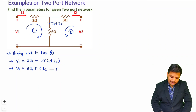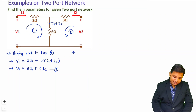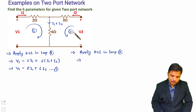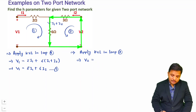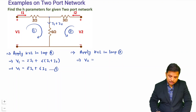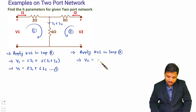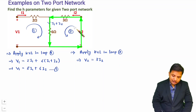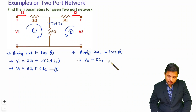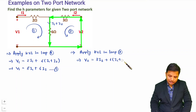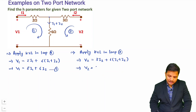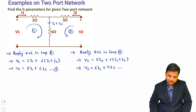Now let us apply KVL in loop 2. V2 appears from minus to plus, so V2 equals the voltage across the 3-ohm resistor — current i2 flows through it, giving 3·i2 — plus the voltage across the 6-ohm resistor where current is i1 plus i2, giving 6·(i1 + i2). Simplifying, V2 = 6·i1 + (3 + 6)·i2 = 6·i1 + 9·i2. This is equation 2.